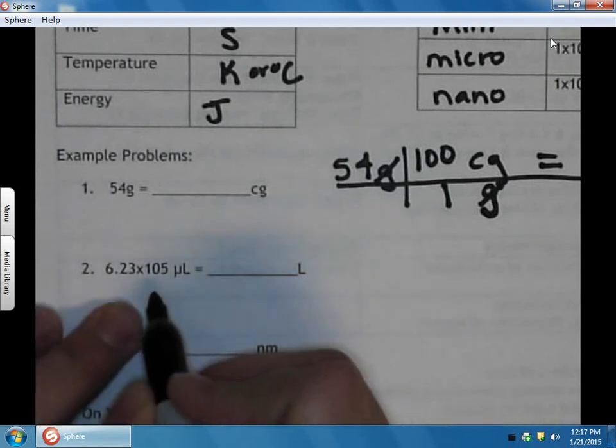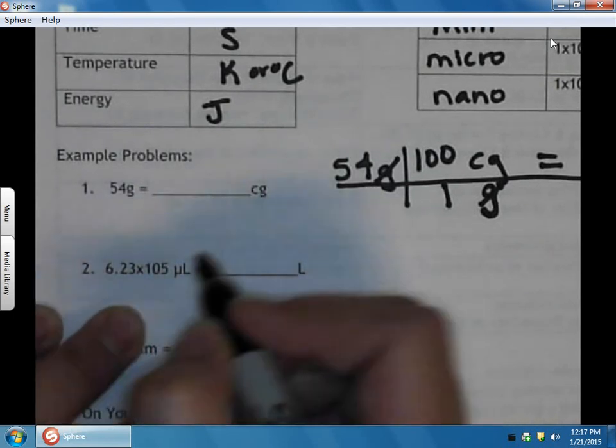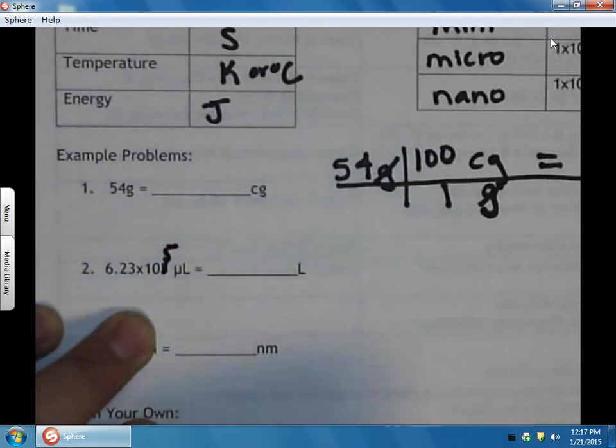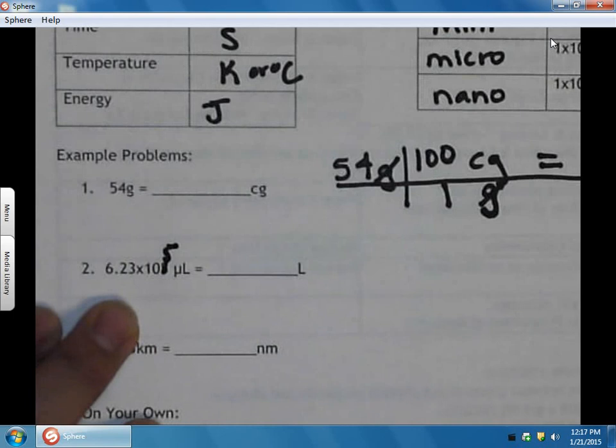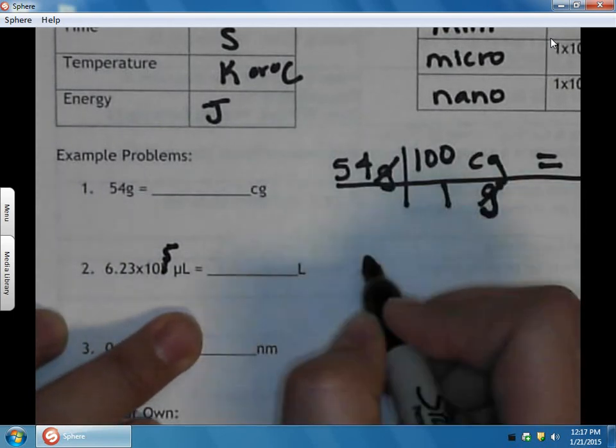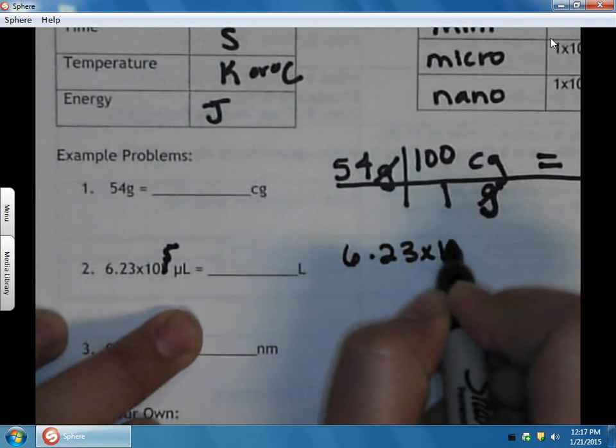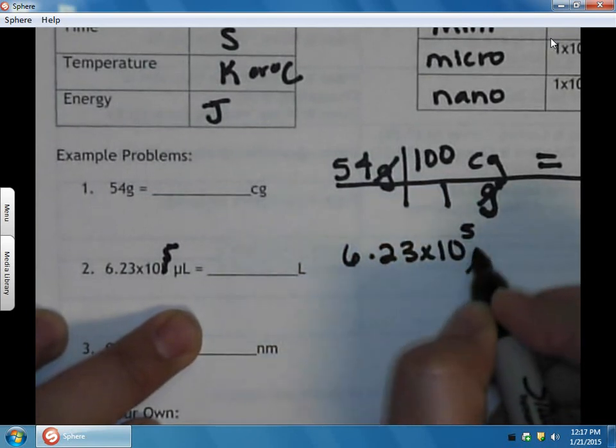In the next problem, we have 6.23×10^5—that should be to the 5th power—microliters. We want to know how many liters, so again we start with what we're given: 6.23×10^5 microliters.